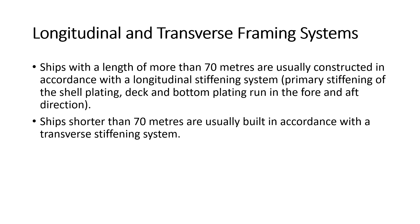Ships shorter than 70 meters, such as fishing vessels or tugboats, are usually built with a transverse stiffening system. The decision between longitudinal or transverse framing is also influenced by the ship's form — for ships for inland navigation and barges, longitudinal stiffening is cheaper and easier. If the ship is shorter than 65 meters, classification societies generally do not require a calculation for longitudinal stress.